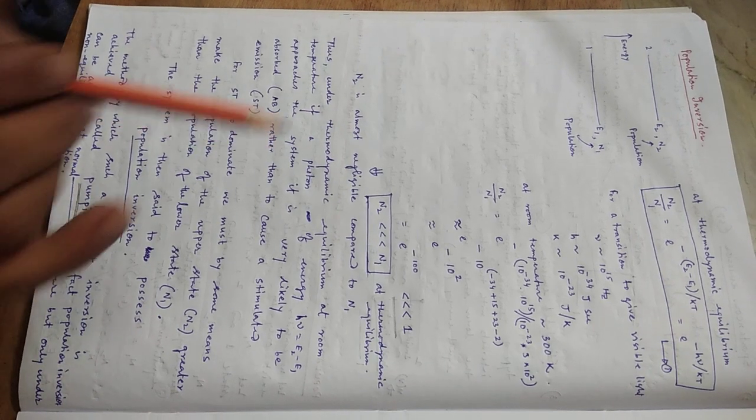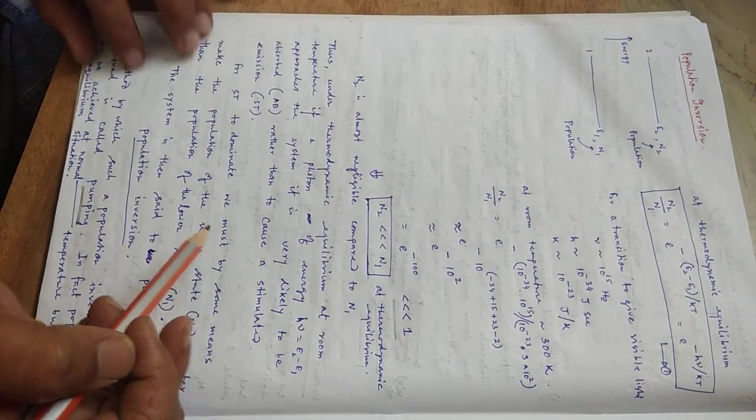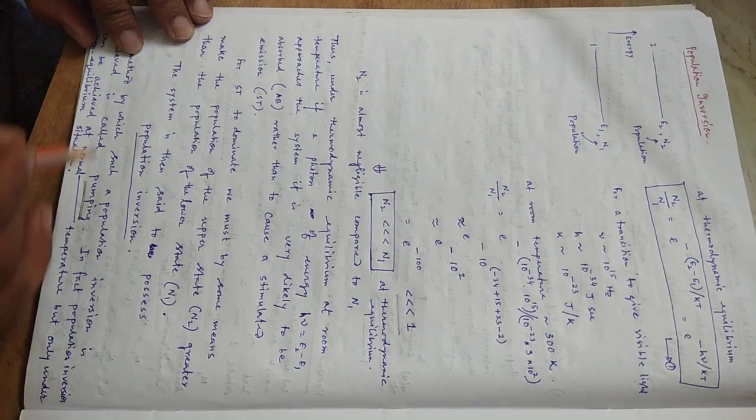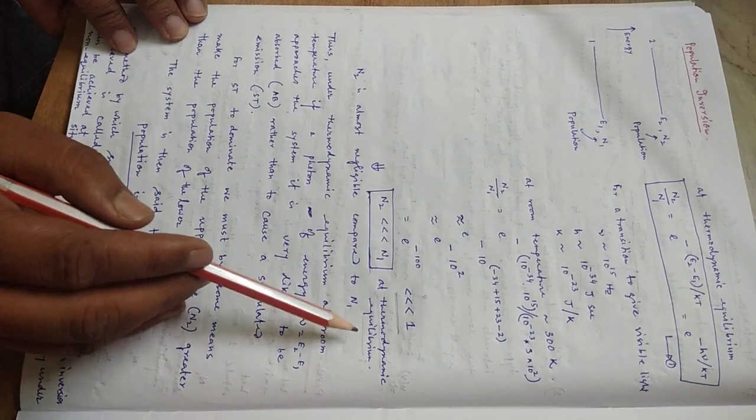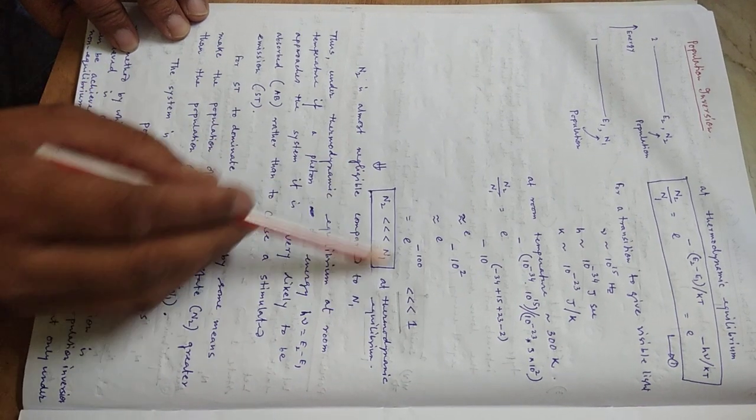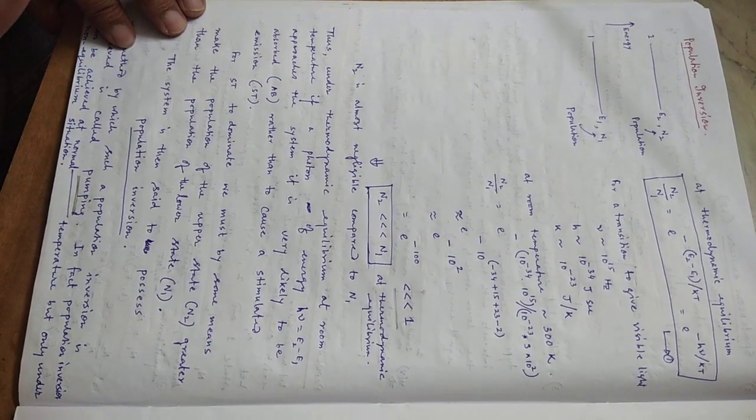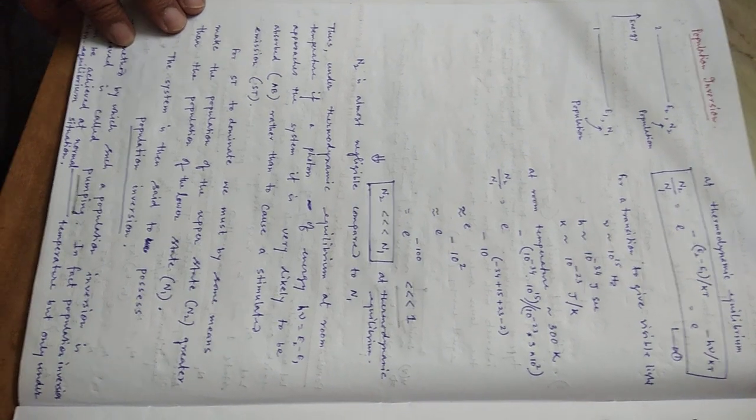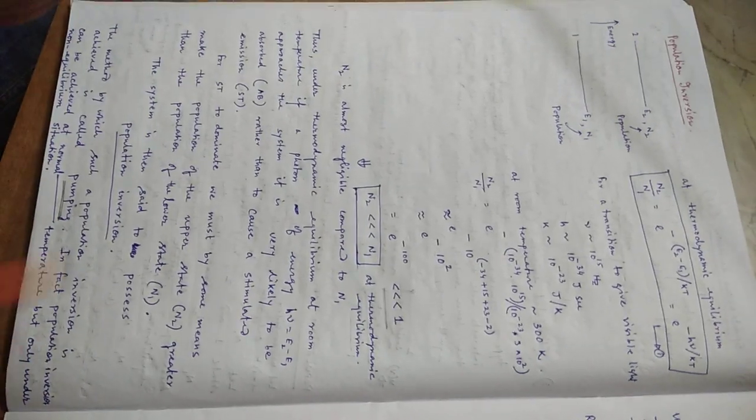And also we have to understand another thing from this particular situation, that this population inversion thing cannot be achieved if your system is at equilibrium. Because at equilibrium, at thermodynamic equilibrium, the situation will always be like this. So somehow we need to bypass that thermodynamic equilibrium condition or somehow we need to trick the system.